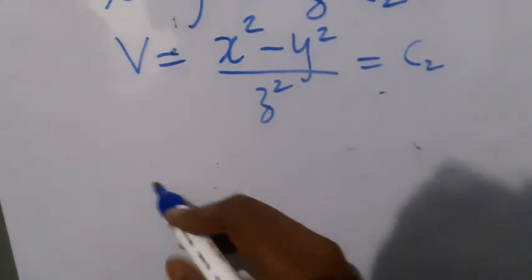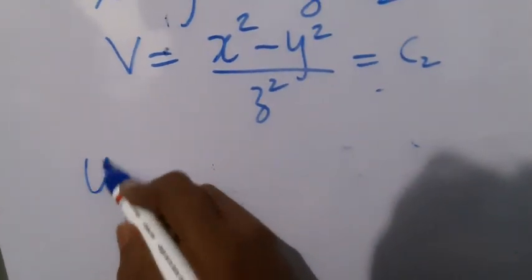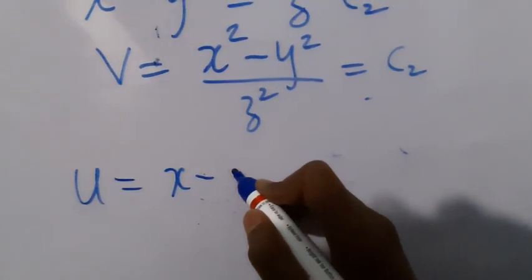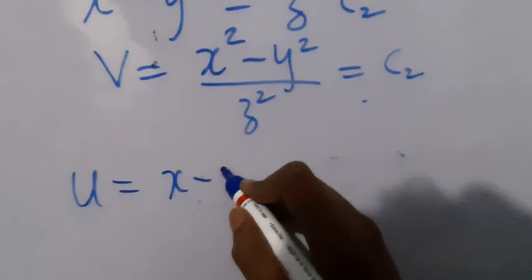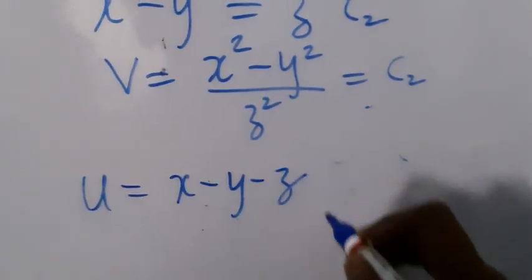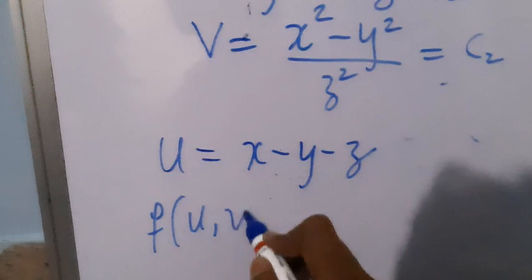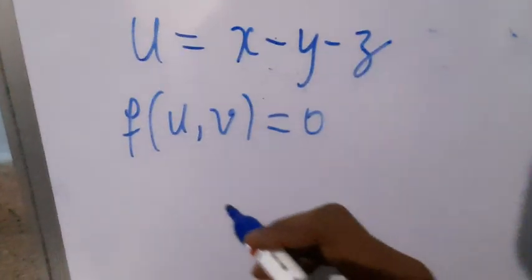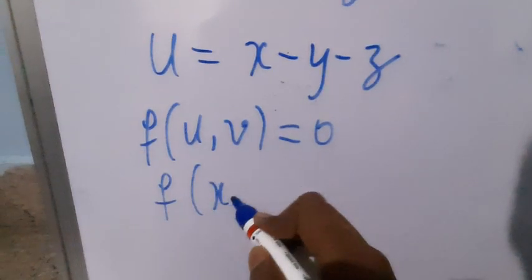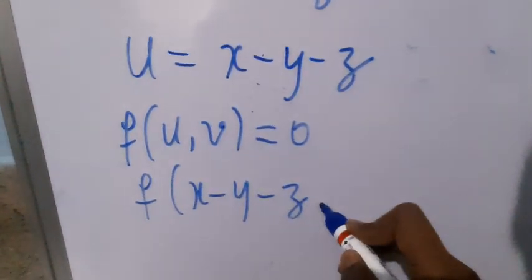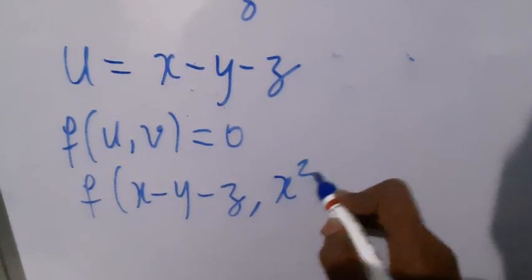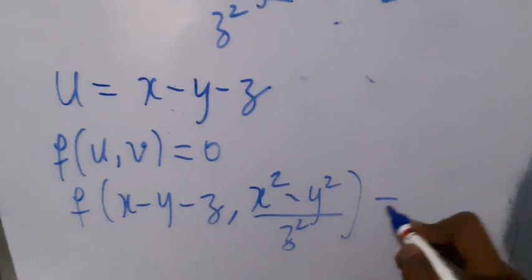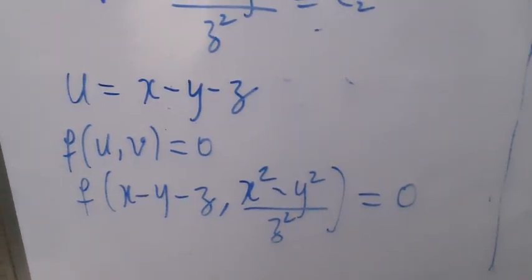So U equal to x minus y minus z and V equal to (x²-y²)/z². Since f(U,V) equal to 0 is the complete solution, we write f(x minus y minus z, (x²-y²)/z²) equal to 0 as the general solution of this PDE.